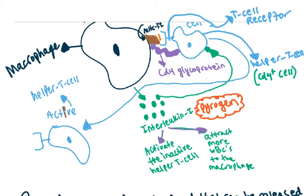Previously it's inactive, but once it comes in contact with interleukin-1 and the binding process, the helper T cell becomes active. Another thing interleukin-1 can do is it can attract more white blood cells to the macrophage so it can take care of the pathogen. We can deal with the pathogen in a better manner.